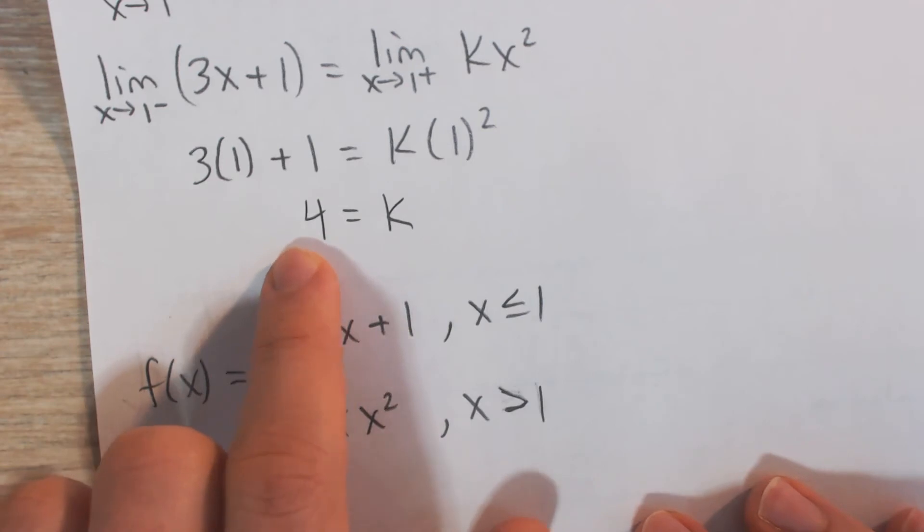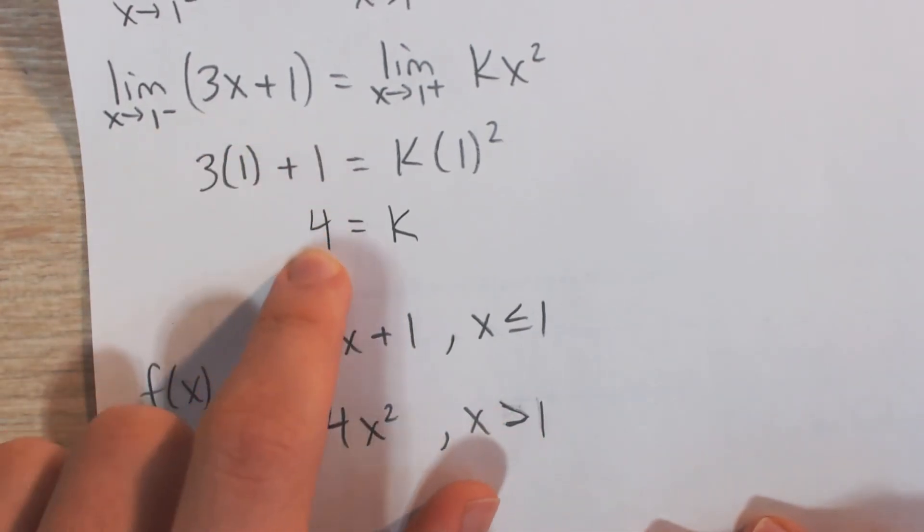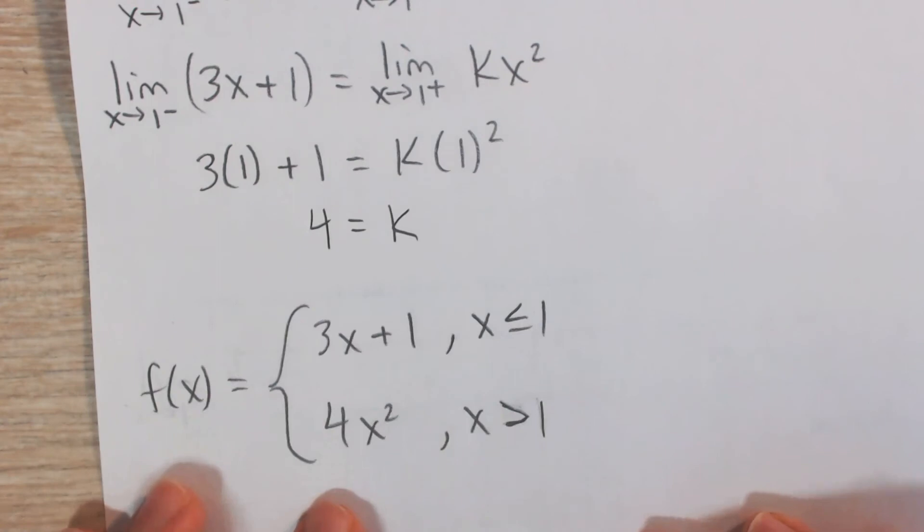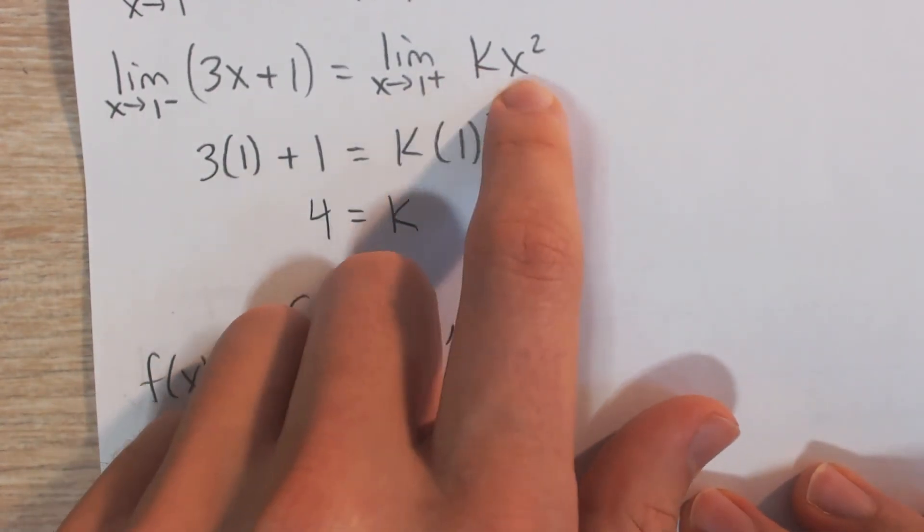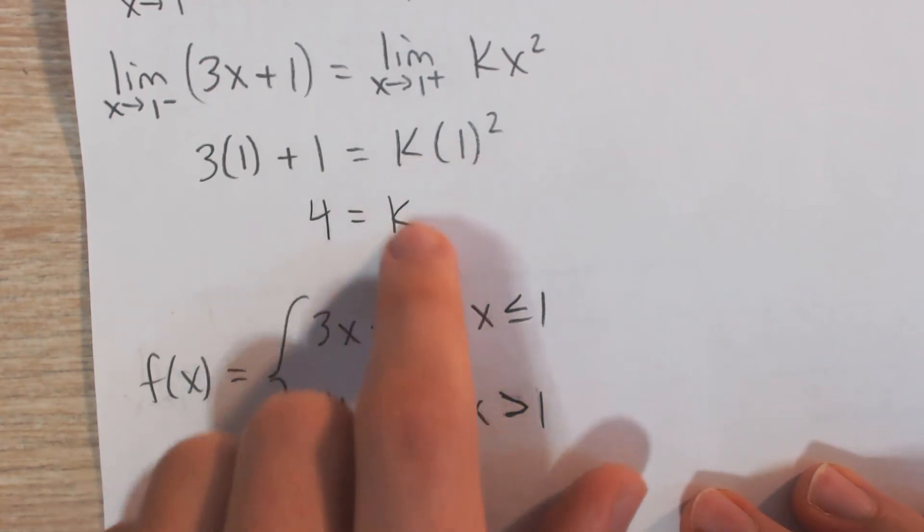And we've already shown that this limit from the left is 4. From the right, we plug in, you can just plug in 4 for k, 1 for x, and again, you're going to get 4.